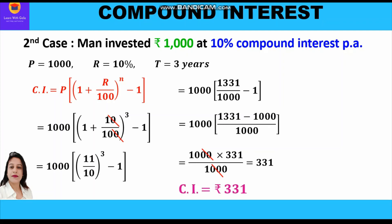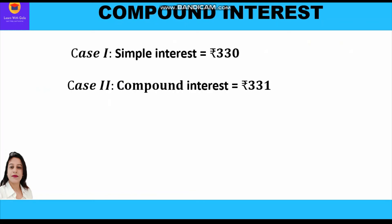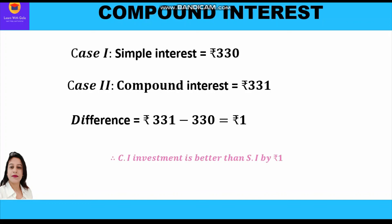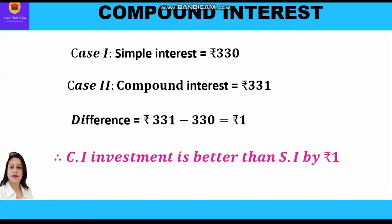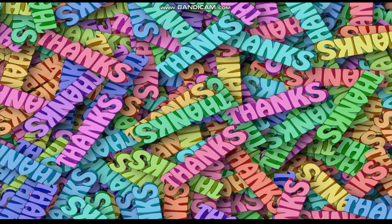In Case 1 we got simple interest of rupees 330, and in Case 2 we got compound interest of rupees 331. The difference between the two is 331 − 330 = rupees 1. So clearly, the compound interest investment is better than the simple interest investment by rupee 1. Please do like and subscribe to the channel — thank you everyone, have a wonderful day ahead.